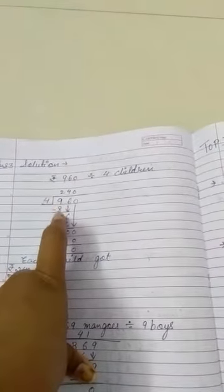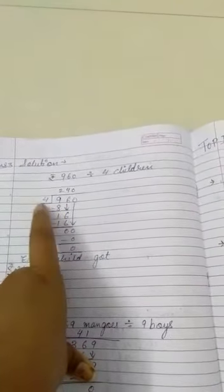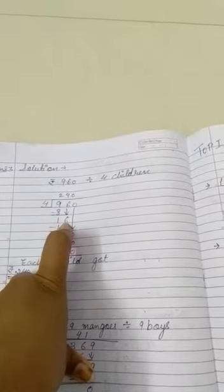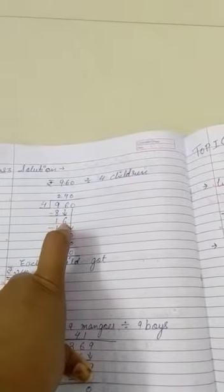Now 960 divided by 4. Does 4 go into 9? Yes, because 9 doesn't come, so we will take the smaller digits. So 8. 9 minus 8 is 1.